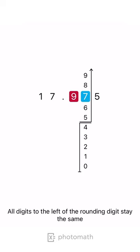All digits to the left of the rounding digit stay the same. All digits to the right of the rounding digit become zeros.